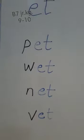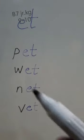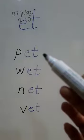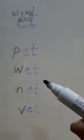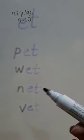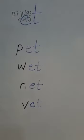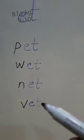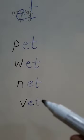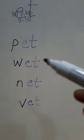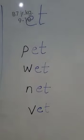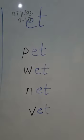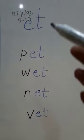So these are the et words. Pet, wet, net, and vet. This vet is a pet's doctor. This wet means you are getting wet. Pet, vet. Understand this?